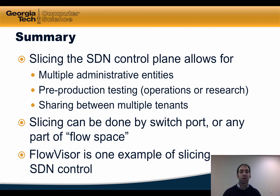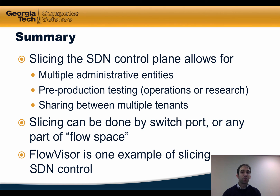In summary, slicing the SDN control plane allows the possibility for multiple administrative entities to control a single set of SDN switches. This might be used for pre-production testing and also sharing the network between multiple entities or tenants. Slicing can be performed in a variety of ways, including by switch port or on any part of flow space. FlowVisor is one example of slicing SDN control, but there are other ways to do this as well. The notion of slicing isn't particularly new — virtual LANs is one rudimentary way of slicing a network — but slicing SDN control allows for many more possibilities for sharing the network among multiple entities.